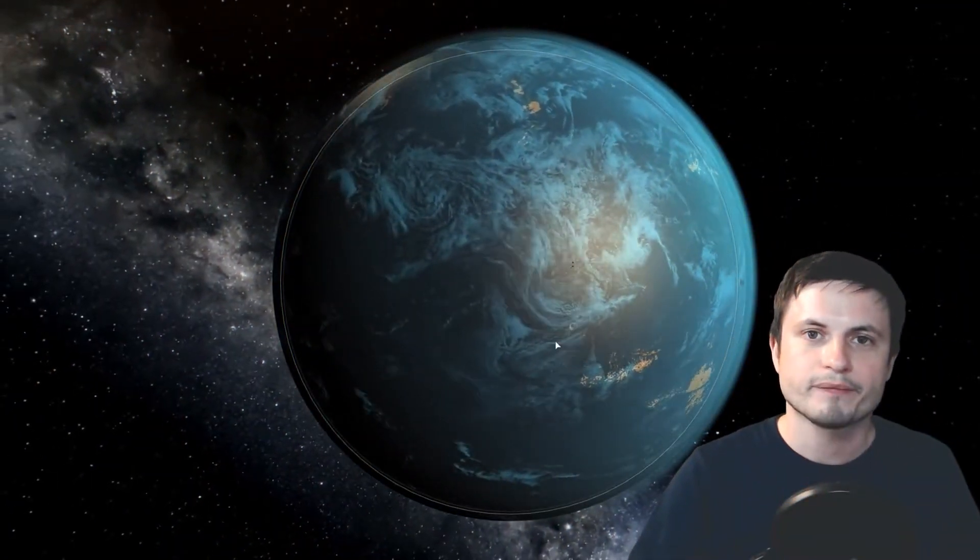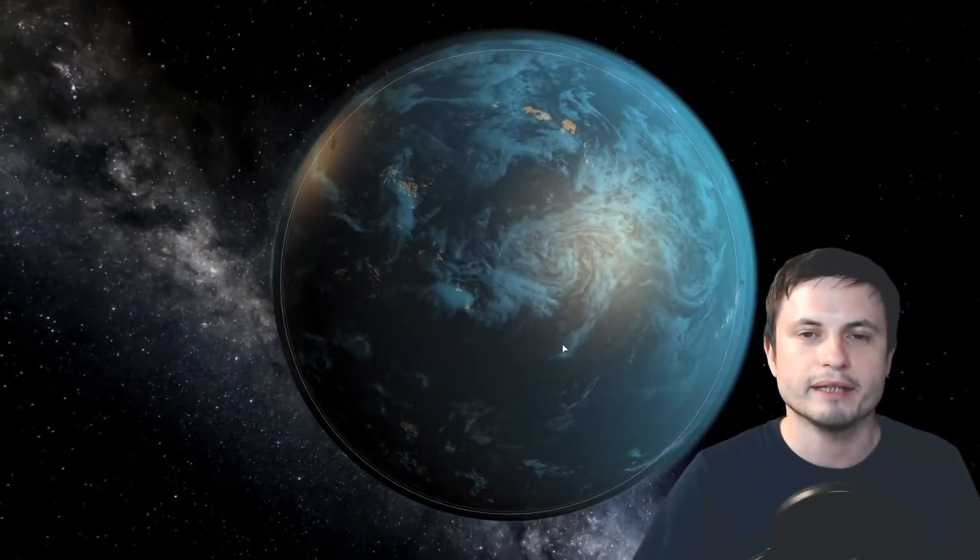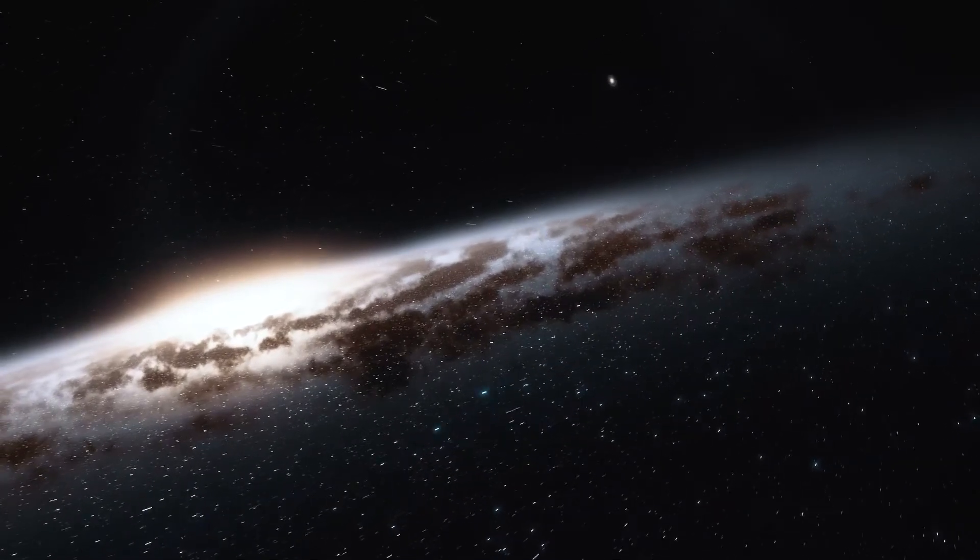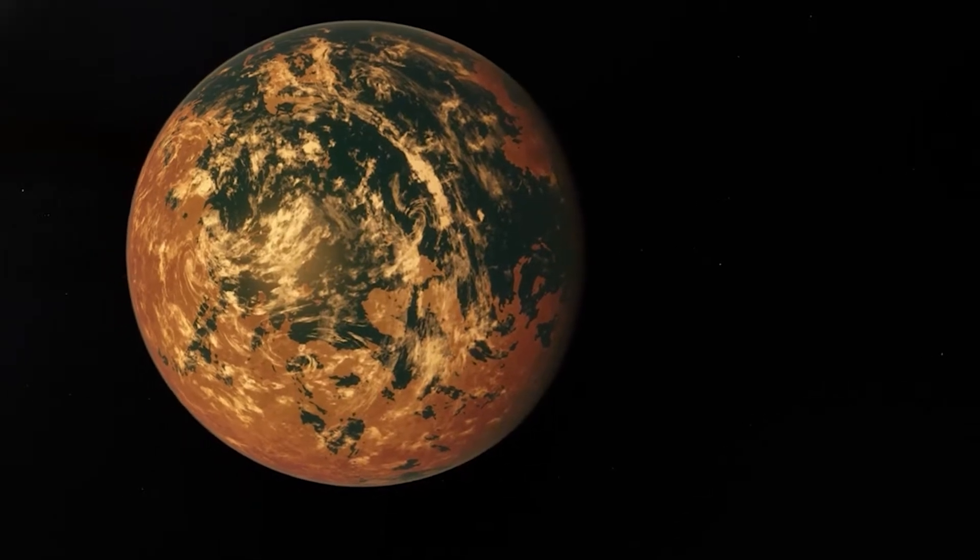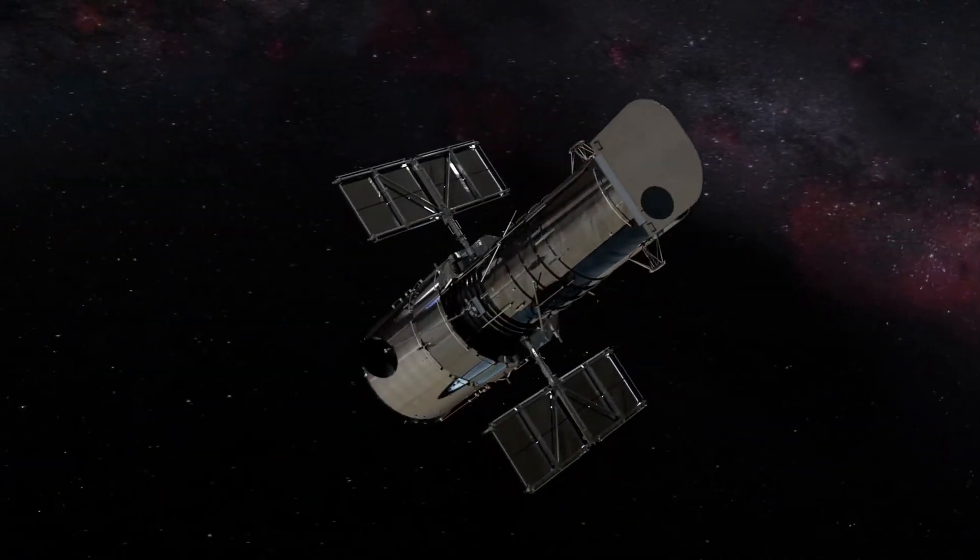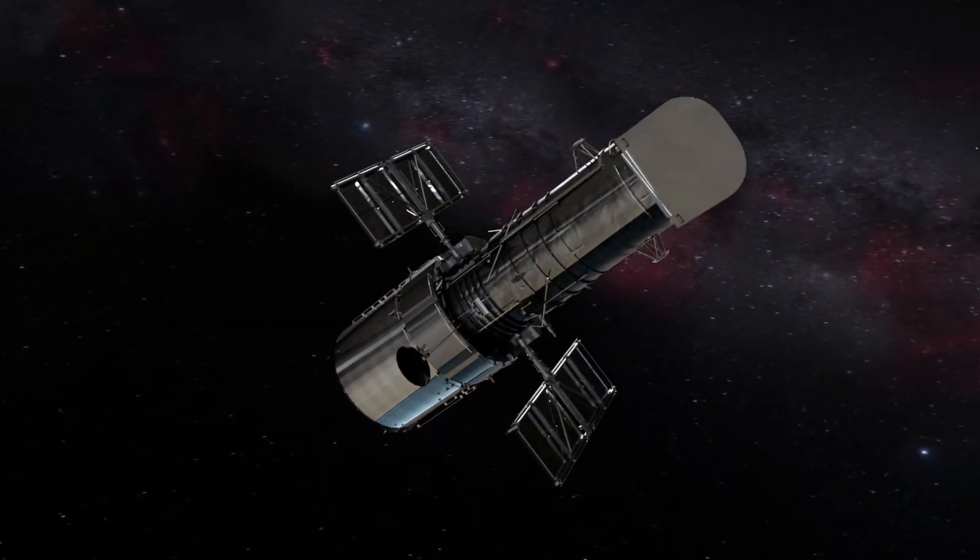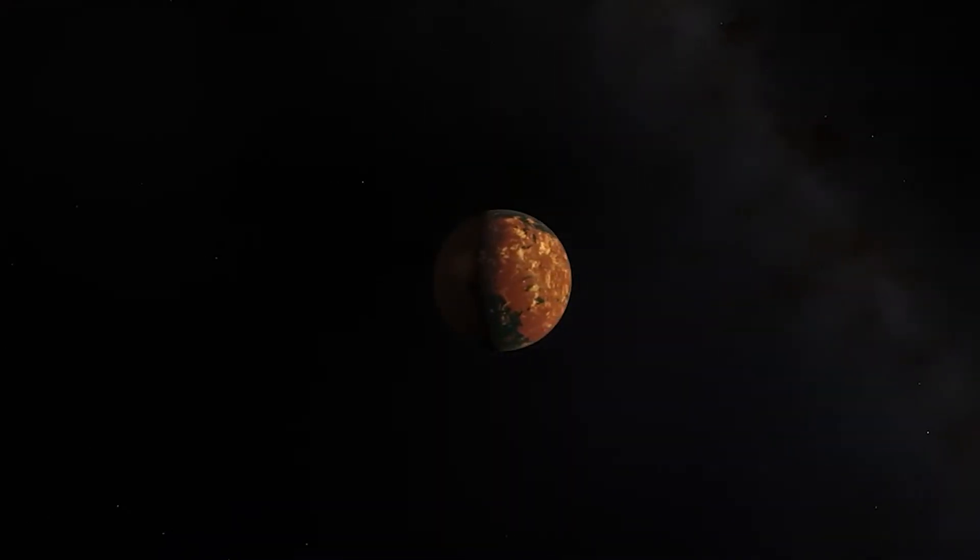The planet was discovered in 2011 based on ground-based detections of the subtle, periodic dimming of light from its host star as the planet transitioned or passed in front of it. Other telescopes, including NASA's Hubble and Spitzer Space Telescopes, have previously detected water vapor, sodium, and potassium in the planet's environment.